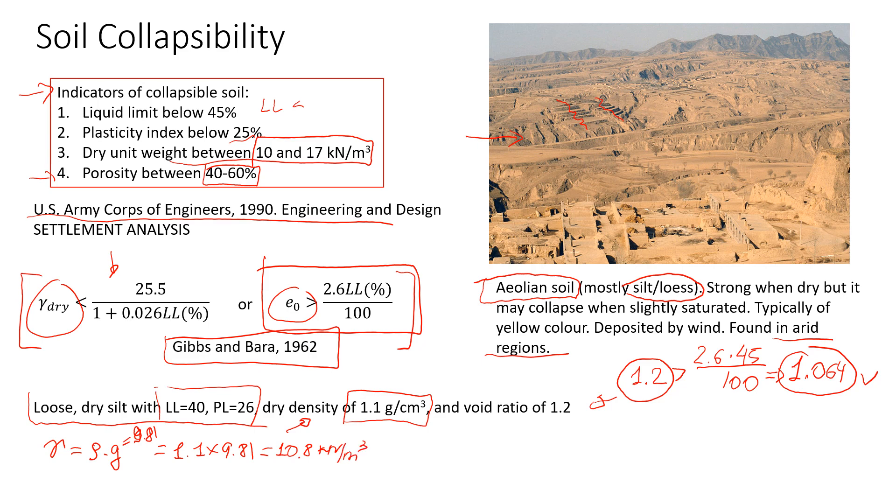If you have any questions about the units, why we have grams per cubic centimeters and how they change to kilonewtons per cubic meters, please watch my other video about soil constituents. There is explanation there. Now we're going to put the numbers in that first formula. We're going to have 10.8 as our dry unit weight, and it should be less than 25.5 divided by 1 plus 0.026 times liquid limit. And again, it's in percentage, it will be 45.